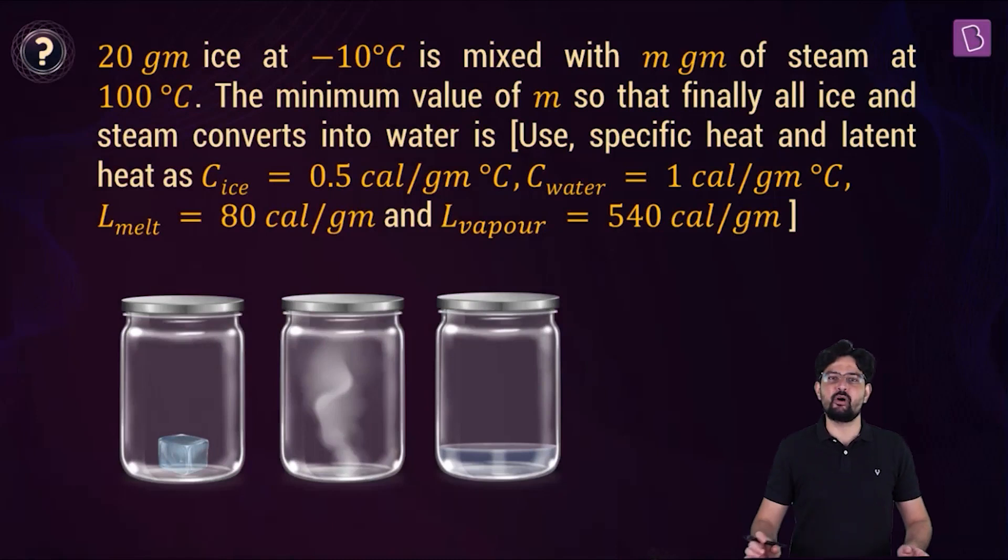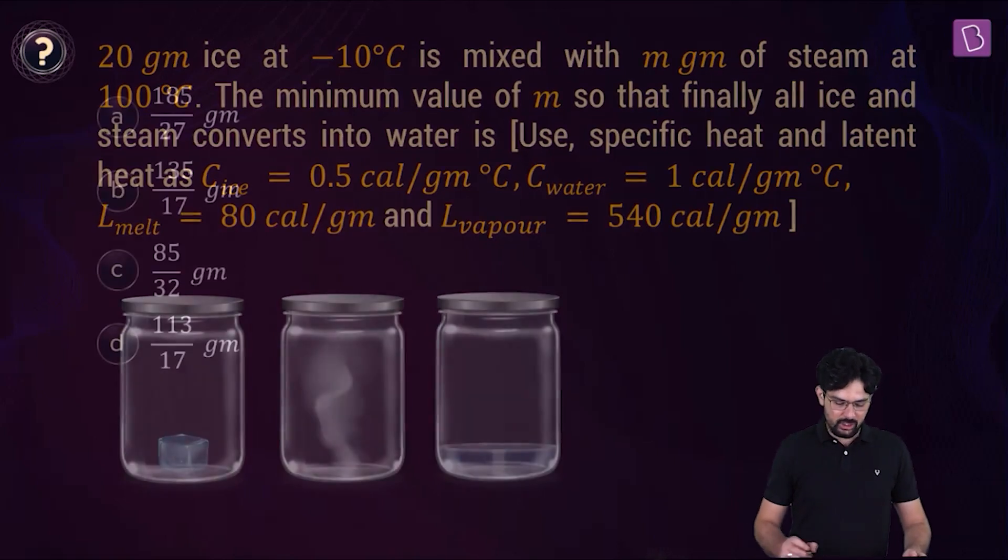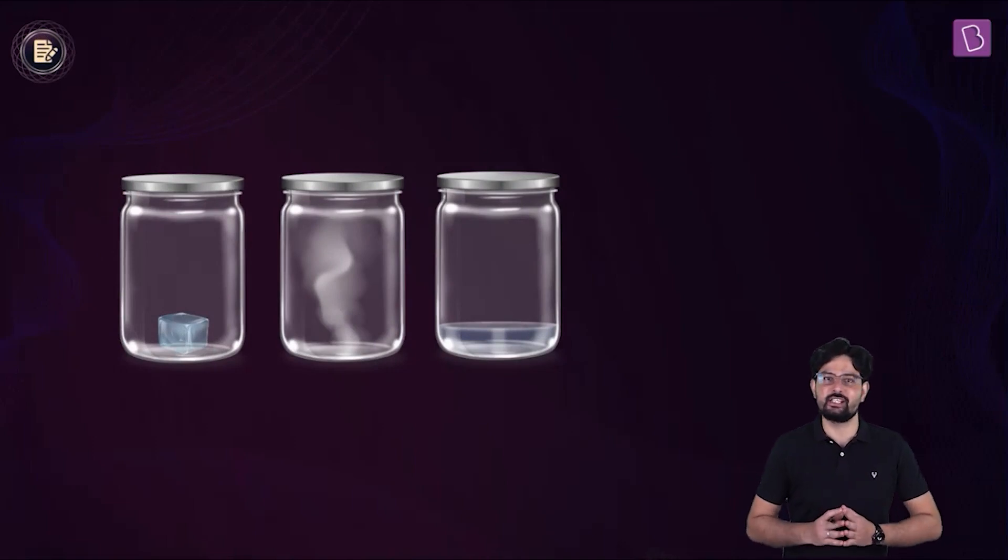There is 20 gram of ice at minus 10 degrees Celsius, which is to be mixed with M gram of steam at 100 degrees Celsius. But there is some condition. You have to find out the minimum value of M, so that finally, all ice and steam converts into water. And you can use the values given in this problem statement. So the question is simple. But there is one thing that you need to figure out to ultimately solve this problem.